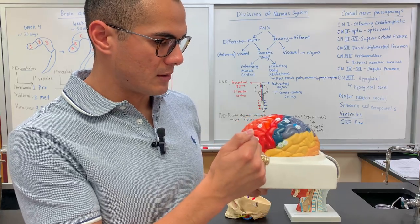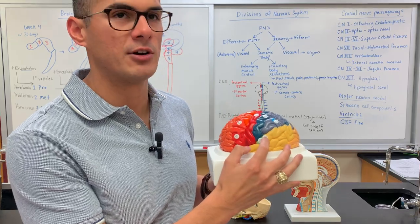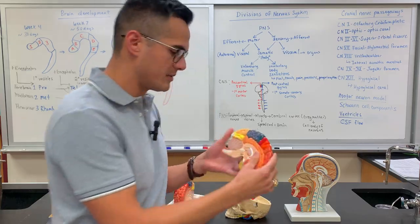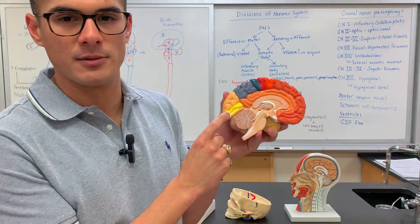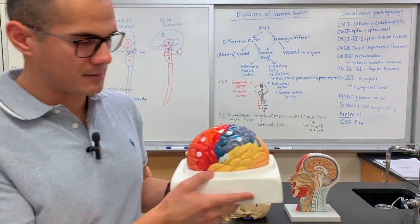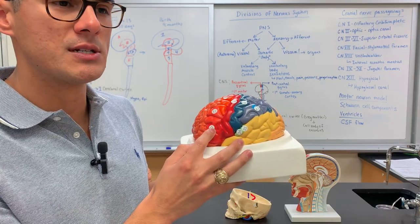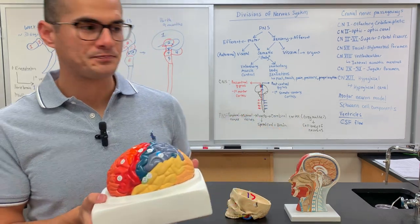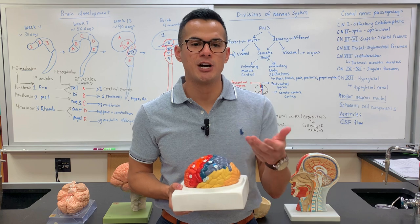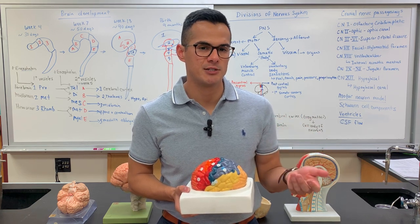Here on the side is the primary auditory cortex at number 34, and then 35 is the auditory association area. Looking at the back of the brain, number 36 is the primary visual cortex — this is for vision. Starting over here is a region known as Broca's area. Broca's area is for speech production, which means it's motor. Wernicke's area is for understanding and interpreting speech, which is more of a sensory function.